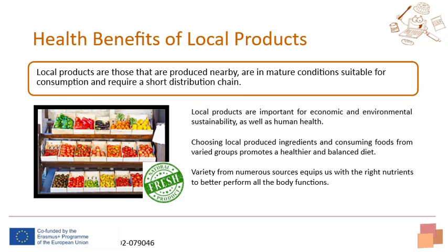Local products are important not only for economic and environmental sustainability but also for ensuring human health. Food can be used to promote health, and it is important to consider the use of local products in the preparation of various types of recipes. Local products are those produced nearby requiring a short distribution chain, remaining fresh. They are seasonal and harvested only when fully ripe. We should also opt for recipes that allow us to consume foods from varied food groups, as variety is very important — the numerous sources of nutrients help us to better perform all functions of our organism.